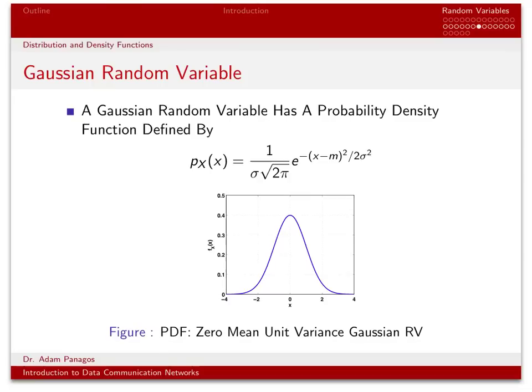We just finished talking about probability density functions and cumulative distribution functions. These functions help us describe the distribution of a random variable. Let's now look at the specifics of these functions for the case of Gaussian random variables, which we often encounter in digital and analog communication systems. Let's specialize the general talk about PDFs and CDFs for when we're dealing with Gaussian random variables.